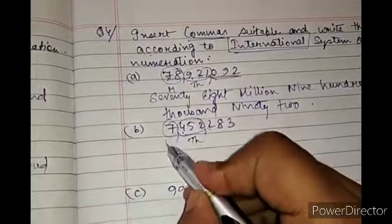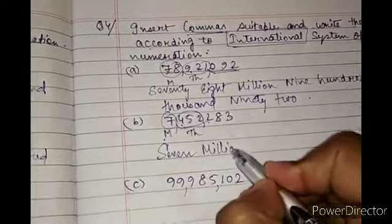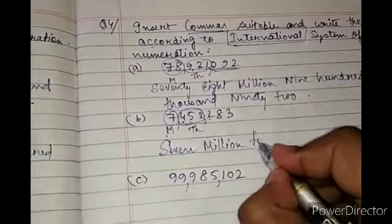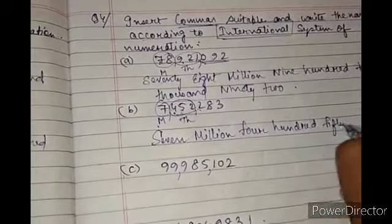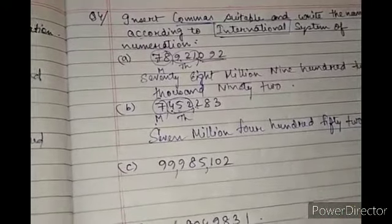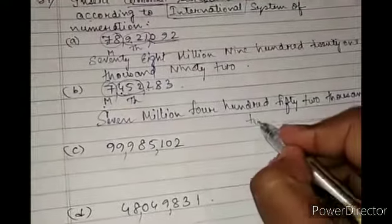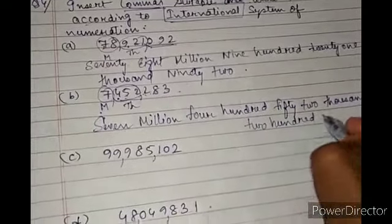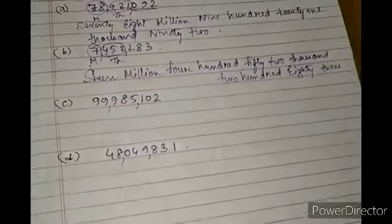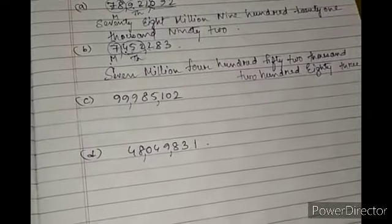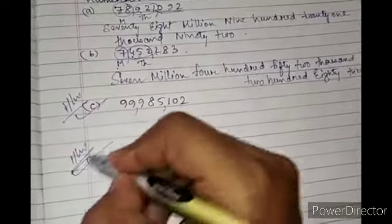Next: ones, tens, hundreds, thousands, ten thousands, hundred thousands — for thousands. Next group for millions. Answer: seven million, four hundred fifty-two thousand, two hundred eighty-three.